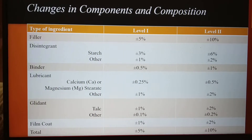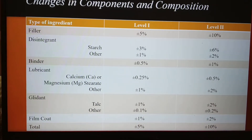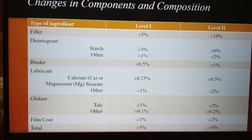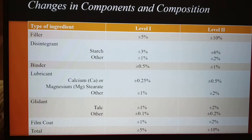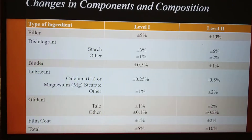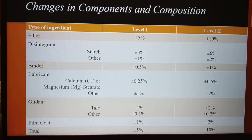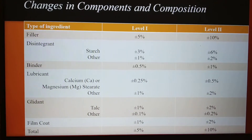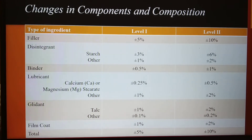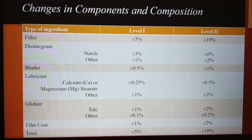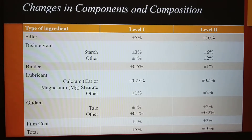For lubricant — calcium and magnesium stearate — the allowed change is plus or minus 0.5%, and for other lubricants it's up to 2%. For glidants, if it is talc the change may be up to 2%, and for others it's 0.2%. Film coating agent change up to 2% falls under Level 2, and the cumulative change should not be more than 10%.